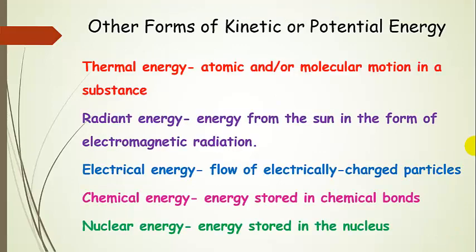There are other forms of kinetic and potential energy to keep in mind. We have thermal energy — atomic and/or molecular motion in a substance. Radiant energy comes from the sun in the form of electromagnetic radiation. Electrical energy is the flow of electrically charged particles. The energy stored in chemical bonds is called chemical energy. And there's also energy stored in the nucleus — that's nuclear energy. This is not an exhaustive list; there are quite a few others.